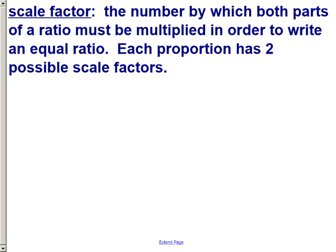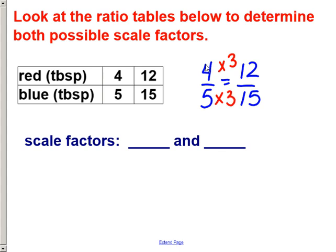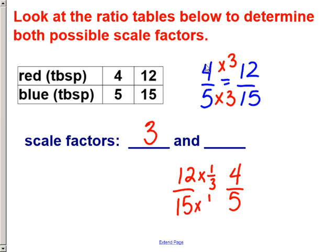One more thing to talk about in relation to ratios is scale factors. A scale factor is the number by which both parts of a ratio must be multiplied to write an equal ratio. Every proportion has two possible scale factors, and this is always a multiplicative relationship. Looking at a ratio table with the ratio of red to blue: 4 to 5 equals 12 to 15. Four times 3 is 12, and 5 times 3 is 15, so 3 is one scale factor. Going the other direction, 12 times one-third is 4 and 15 times one-third is 5, so one-third is the other scale factor.